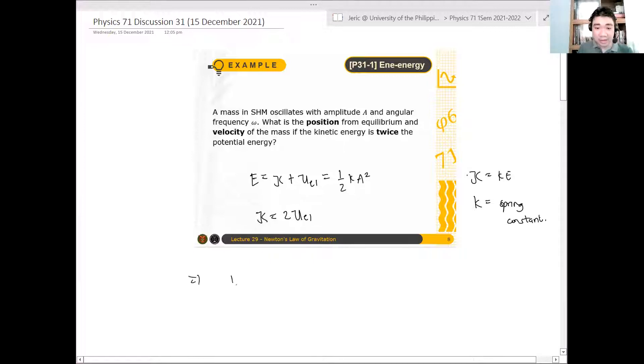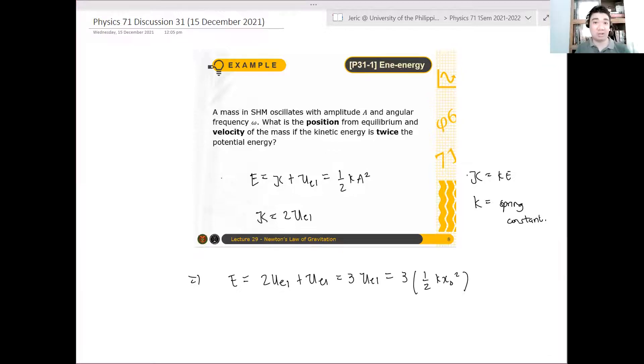the total energy, therefore, is just twice of the elastic potential energy plus another elastic potential energy. And this is just equal to three times the elastic potential energy. What's that? This is equal to 3 times one half k x naught squared, where this condition is true. So let's assume that the position where this is true, where the kinetic energy is equal to twice the elastic potential energy, is at some position x naught.